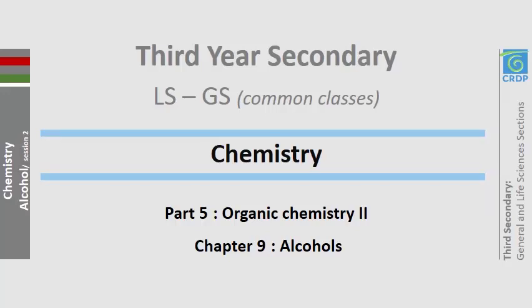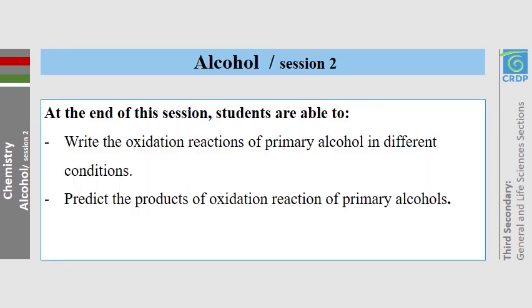Hello students. In this session, which is session number two of chapter nine, Alcohols of Organic Chemistry 2, we are going to learn how to write the oxidation reactions of primary alcohols in different conditions and to predict the products of oxidation reactions of primary alcohols.